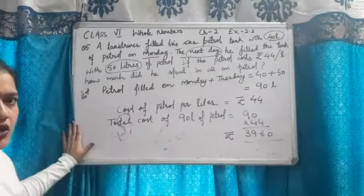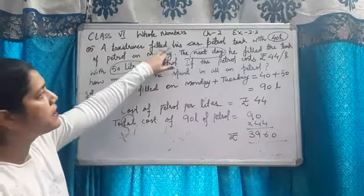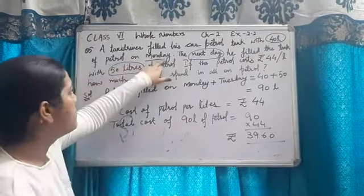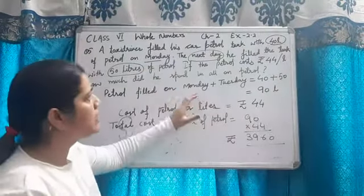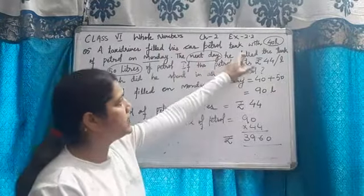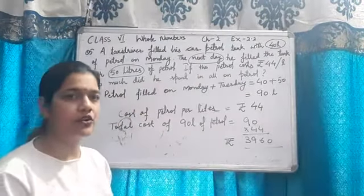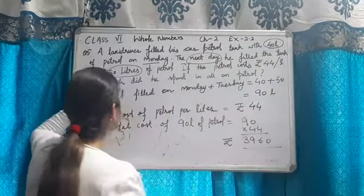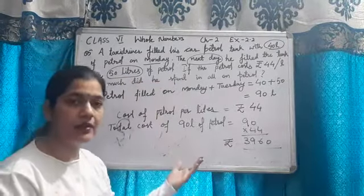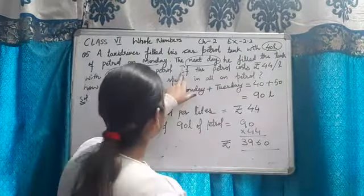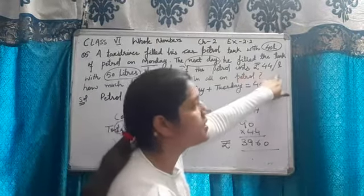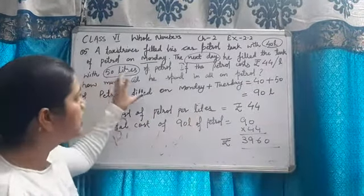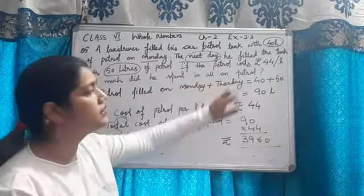Again I am repeating the same question. A taxi driver filled his car petrol tank with 40 litre of petrol on Monday and 50 litres on Tuesday. If the petrol cost rupee 44 per litre, agar 1 litre ki cost 44 hai, you have to find total how much cost did he spend in all on petrol.